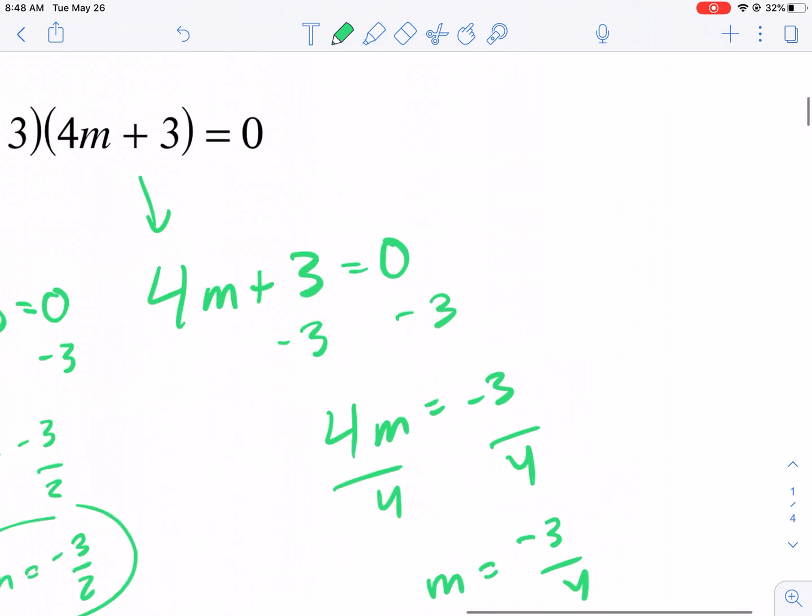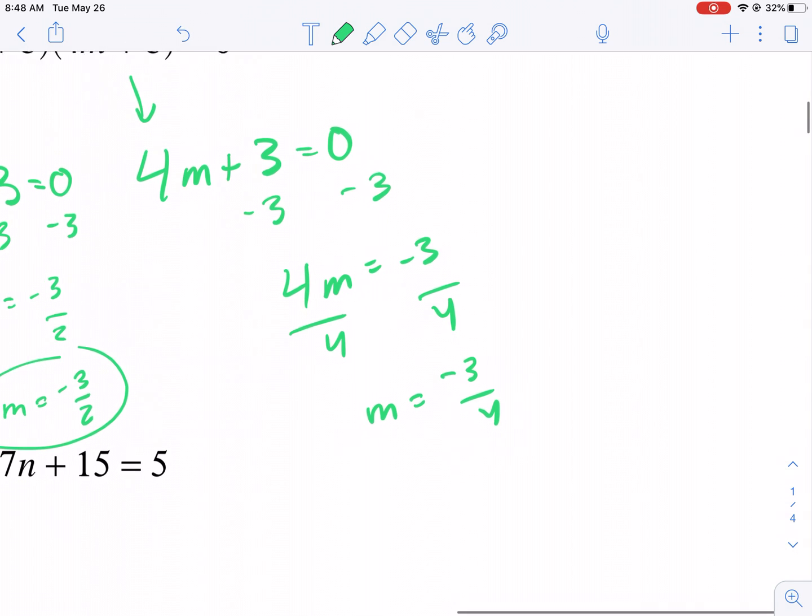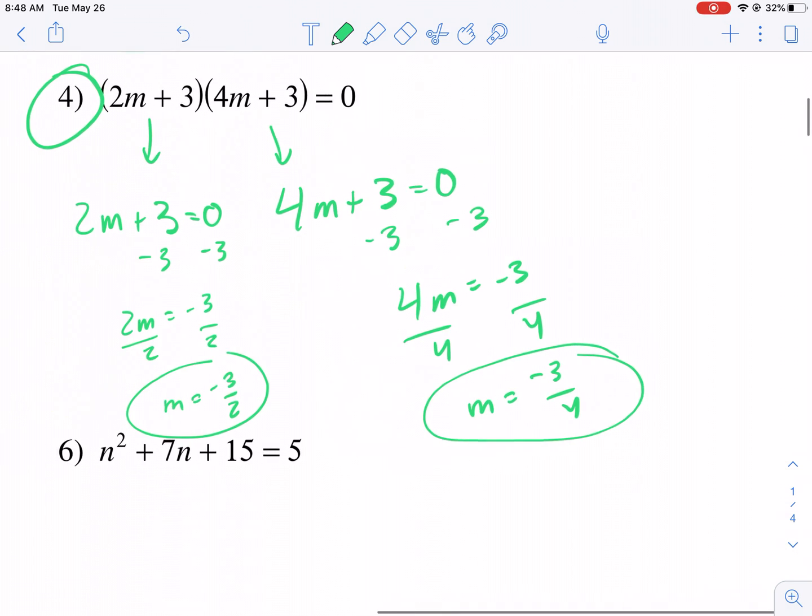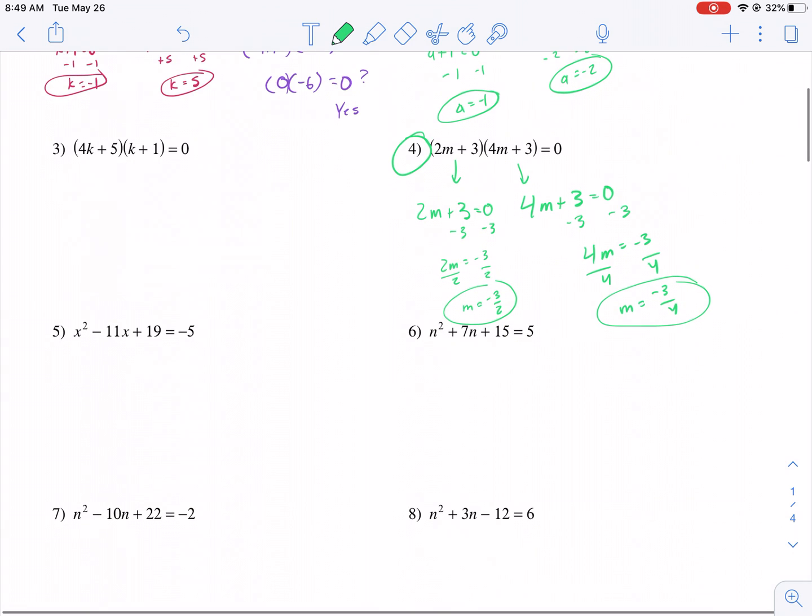So all I'm doing is inverse operations here. First, I move over the 3 by subtracting it from both sides. Then I divide by 4, so I get m equals negative 3 over 4, and m equals negative 3 over 2.